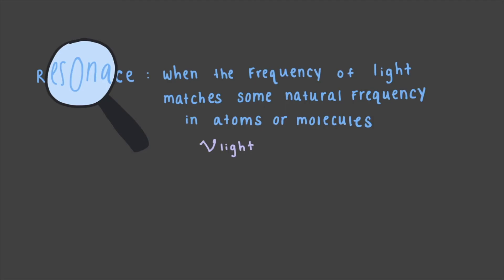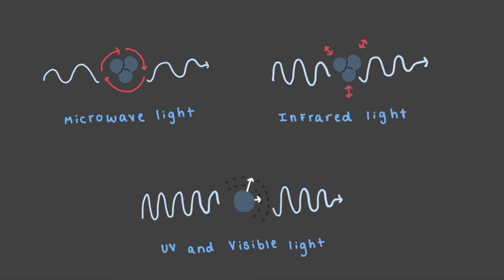As before, if the frequency of light matches a natural frequency in the matter, then the light will transfer energy to the matter. It will be absorbed. Some examples of resonance between light and microscopic matter include how microwave light matches the frequency of molecular rotations, how infrared light matches the frequency of bond vibrations, and how UV and visible light matches natural frequencies of the electron cloud of many atoms and molecules. This is harder to show and we will examine it further in another video.